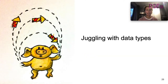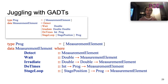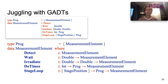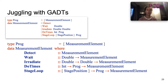Let us now do some more technical stuff — we can start juggling with the data types. Starting from the deep embedding we defined before, we had a type constructor for each term in the DSL. We can encode these measurement elements as a Generalized Algebraic Data Type, or GADT. Programs remain the same. We still have detect, wait, irradiate, do-times, and stage-loop — just the form of implementation is different. We use a GADT instead of a simple data type.